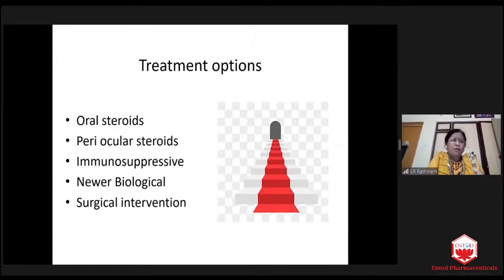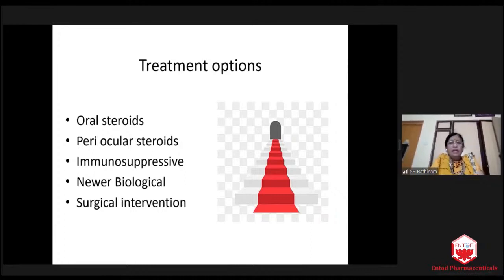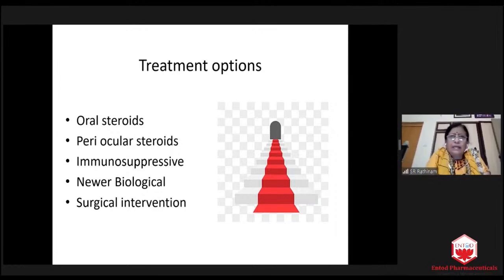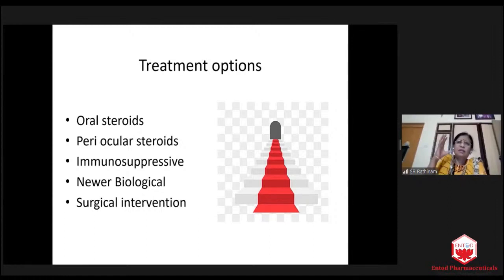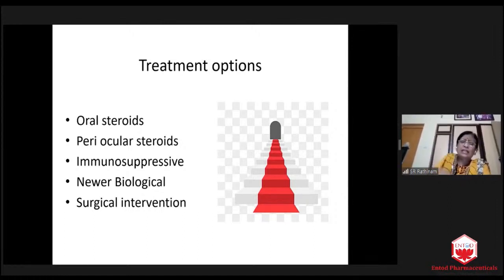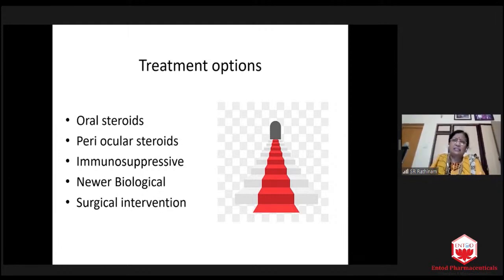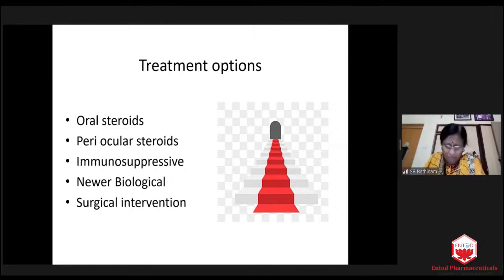The children on adalimumab never develop band keratopathy, never develop cataract, never develop cyclitic membrane, never develop ciliary atrophy. Surgical intervention is extremely challenging in these cases. It is better we do surgical intervention only when they become 16 years. But if a younger child has totally opaque vitreous, vitrectomy can be done — vitrectomy with Ozurdex can be done.